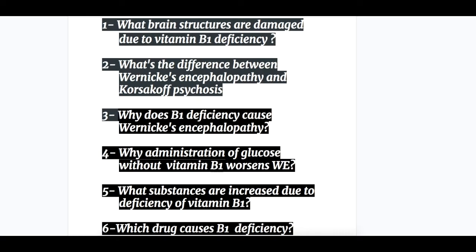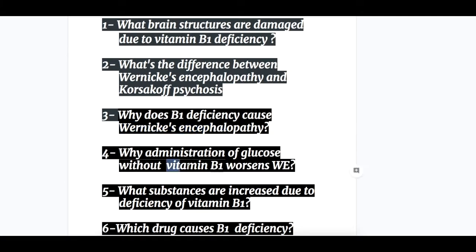Question number one: what brain structures are damaged due to vitamin B1 deficiency? Number two: what's the difference between Wernicke's Encephalopathy and Korsakoff's psychosis? Number three: why does vitamin B1 deficiency cause Wernicke's Encephalopathy? Number four: why does administration of glucose without vitamin B1 worsen Wernicke's Encephalopathy? Question five: what substances are increased due to the deficiency of vitamin B1? And question number six: which drugs cause vitamin B1 deficiency?